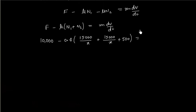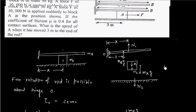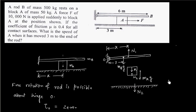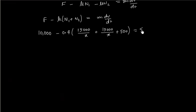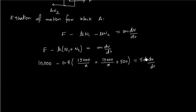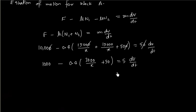Equal to mass of block into acceleration. Mass of block is 50 kg, dv by dt. So we can cancel zero throughout. So this is 0.4, 3000 by x plus 50, 5 dv by dt. We can also cancel 5.